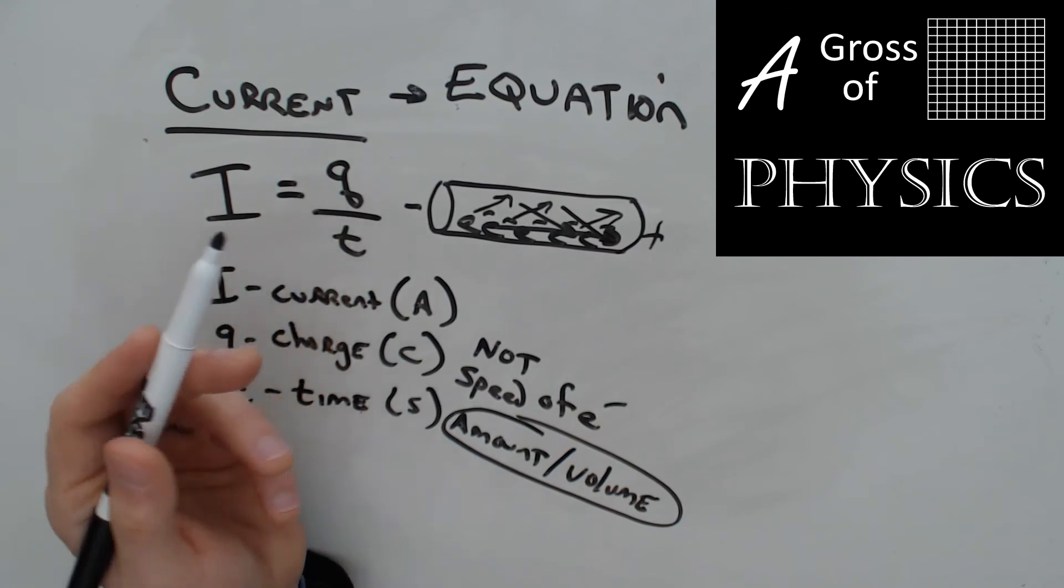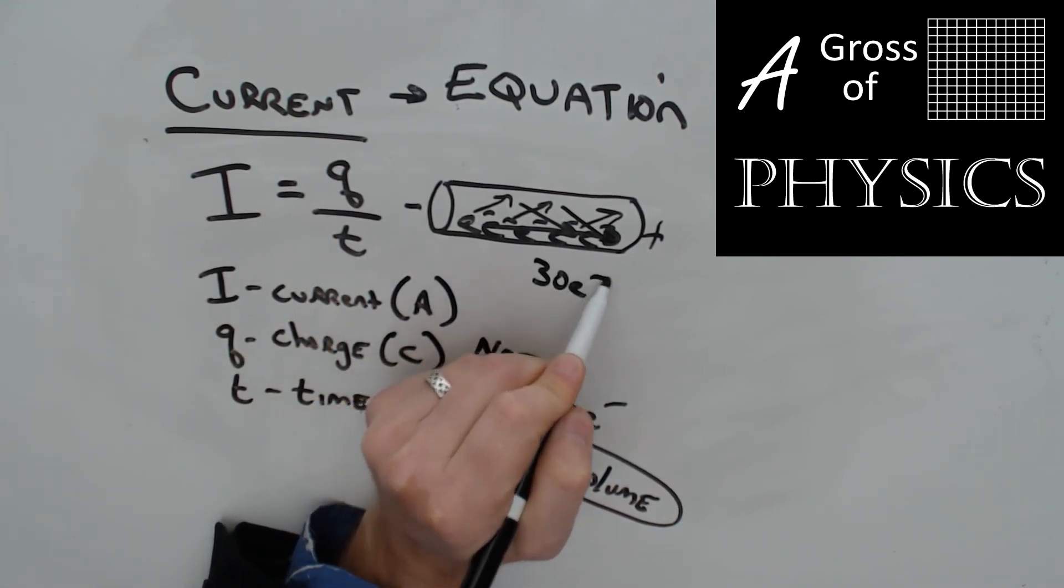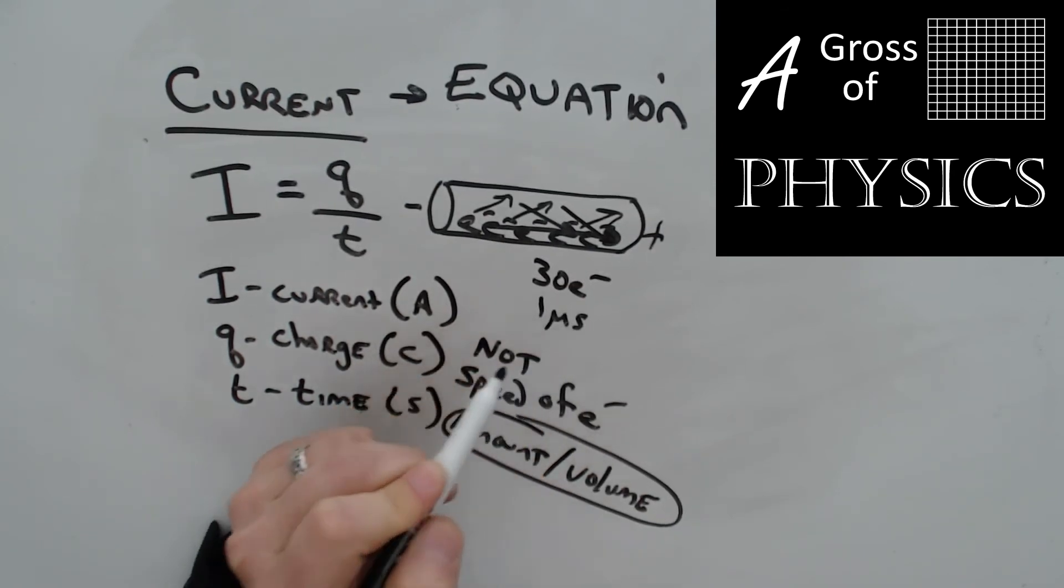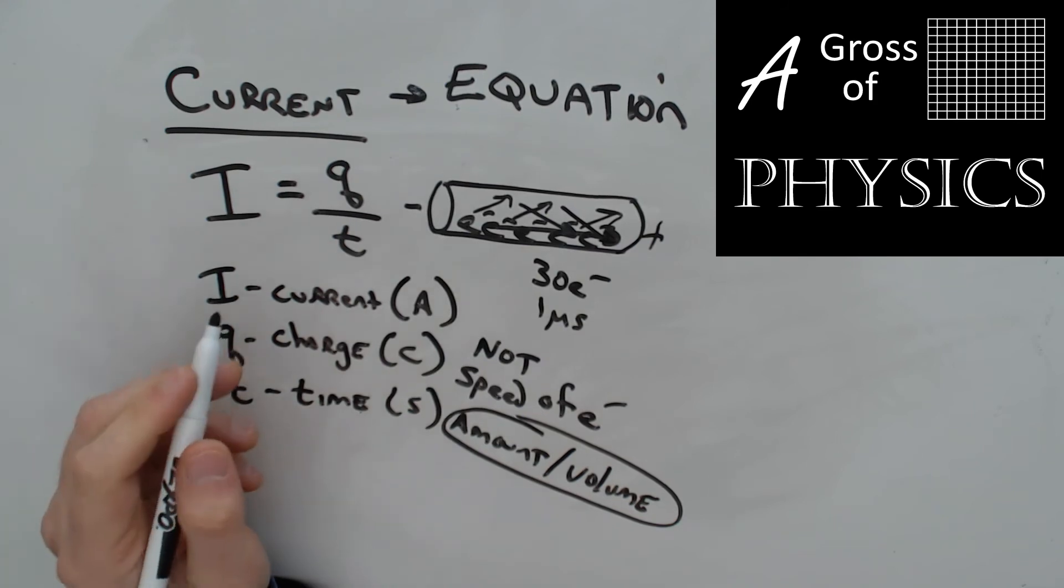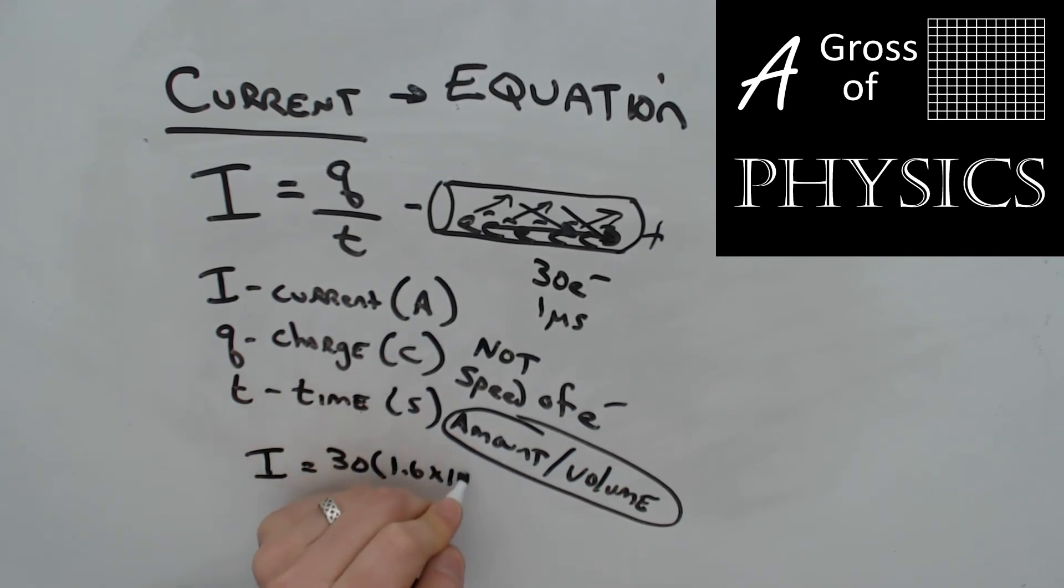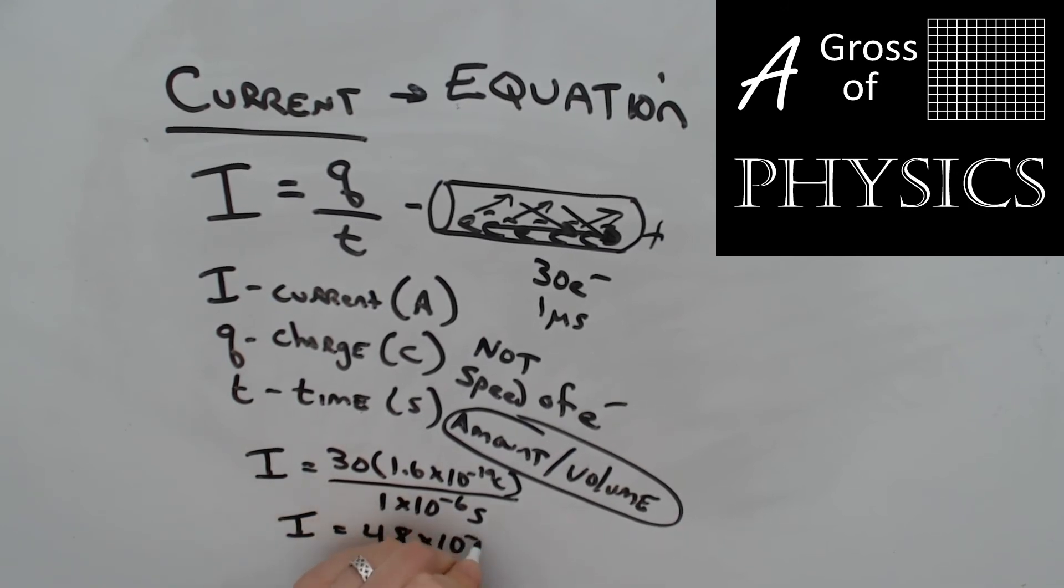Now if we were to calculate it, we would just need the number of charge. So maybe they tell you it's 30 electrons and it takes a microsecond to have 30 electrons pass a certain point in the circuit. So what you need to do is find the total charge of 30 electrons. And the way I would do that is I'm going to do I equals 30 times 1.6 times 10 to the negative 19 coulombs. Each one has a charge of one elementary charge. And the time is 1 times 10 to the negative 6 seconds. Micro is 10 to the negative 6. So if I were to do my calculation, I'd hit 30 times 1.6 E negative 19, and I'm going to divide that by 1 E negative 6. And I'm going to get I of 4.8 times 10 to the negative 12 amperes.